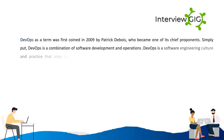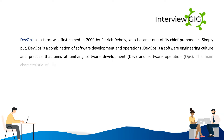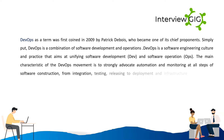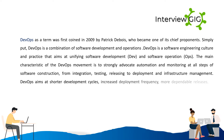DevOps is a software engineering culture and practice that aims at unifying software development and software operations. The main characteristic of the DevOps movement is to strongly advocate automation and monitoring at all steps of software construction, from integration, testing, releasing to deployment and infrastructure management.